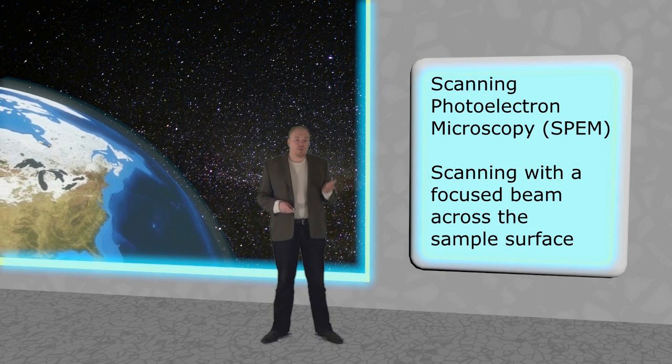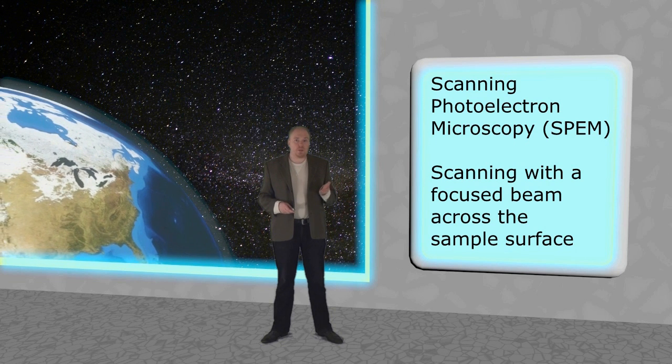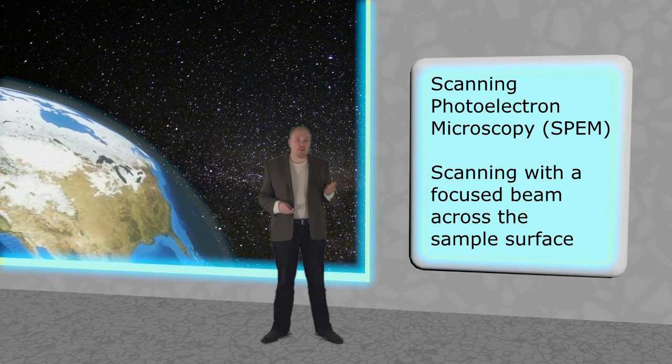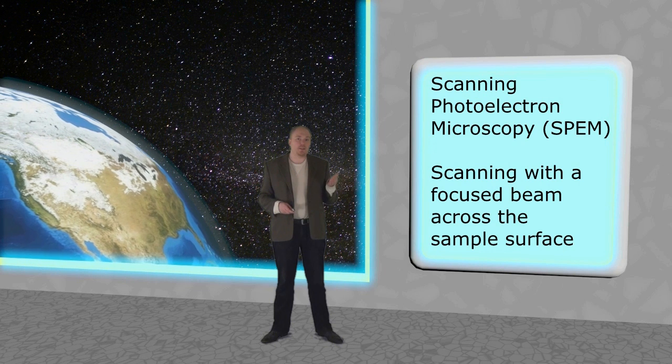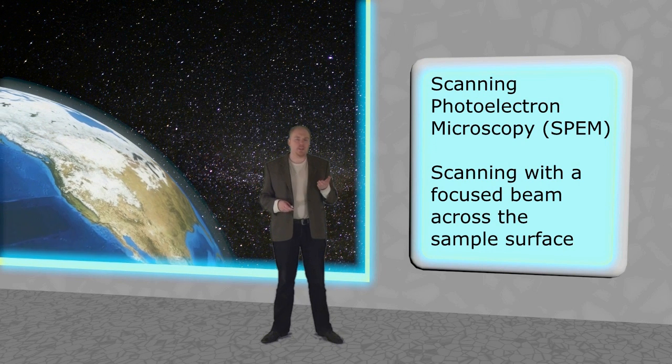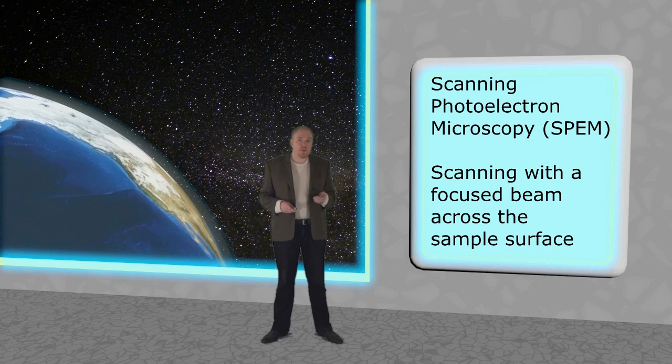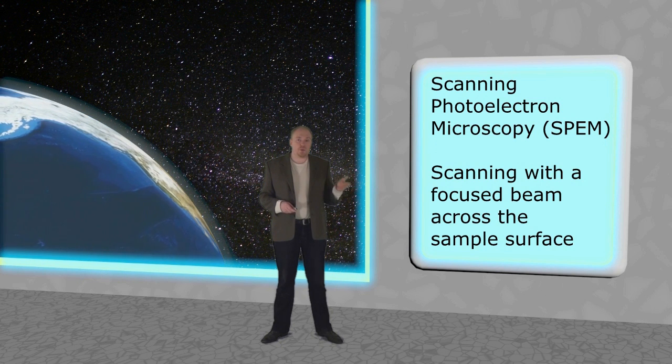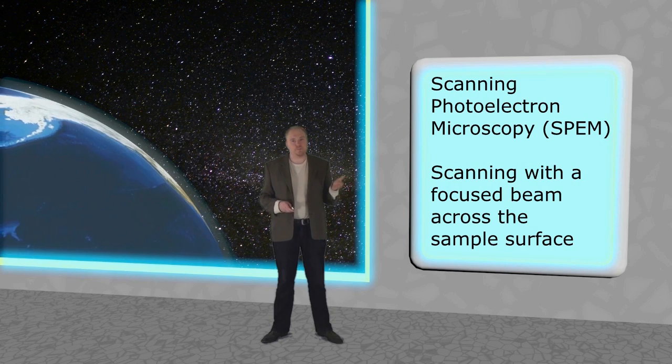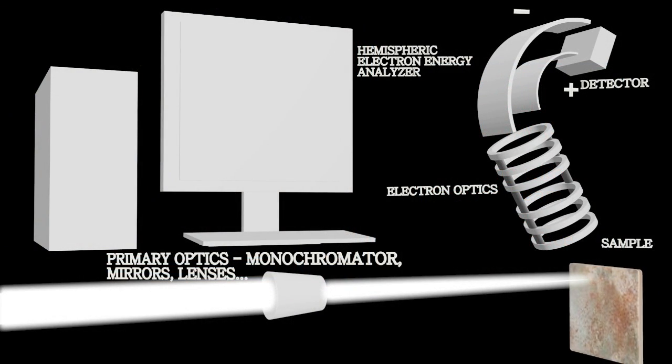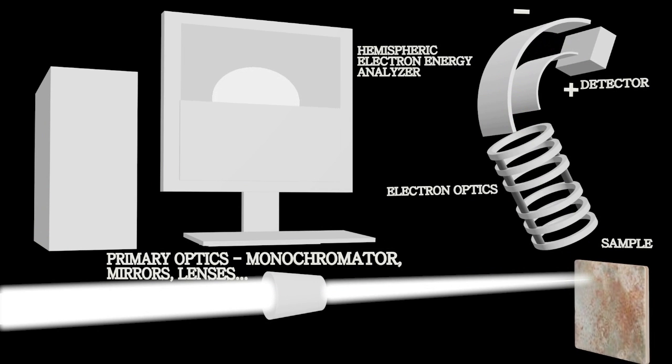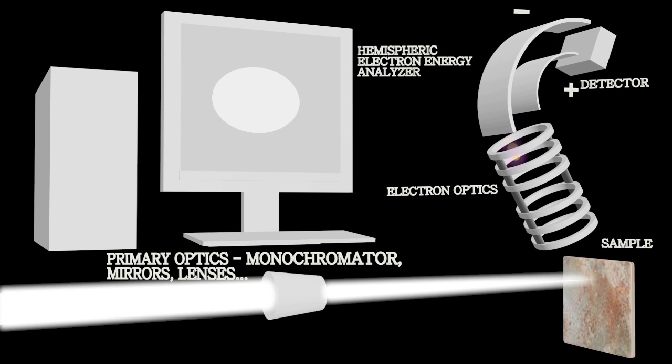Now, if we wanted to map the elements on a sample surface, then we would need to use scanning photoelectron microscopy instead. And in this method, the primary beam, usually obtained with a synchrotron, is focused into a narrow spot on the sample surface. The sample is now moved with piezo scanners in such a way that the tiny primary beam spot moves row by row across the surface. From each irradiated spot, photoelectrons are emitted and collected.